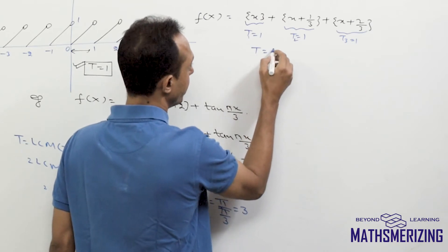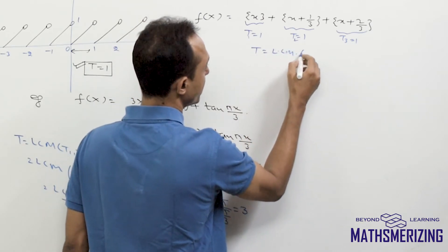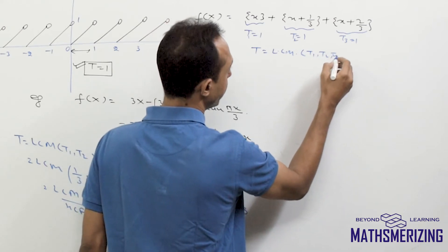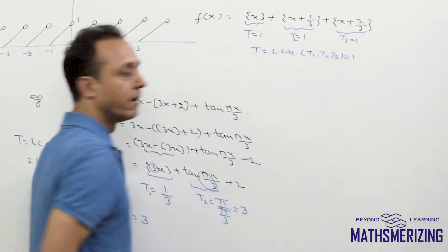then the period of the given function will be LCM of t1, t2, and t3, so they will be simply 1.